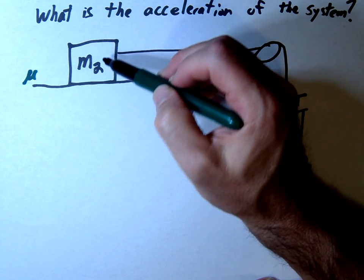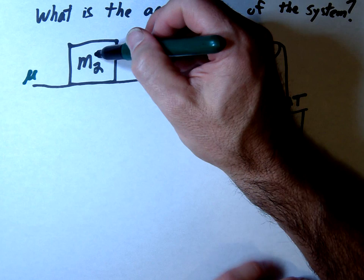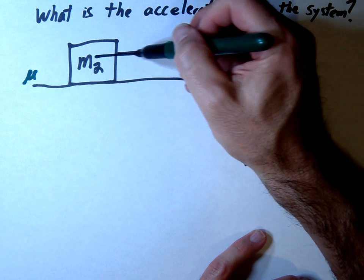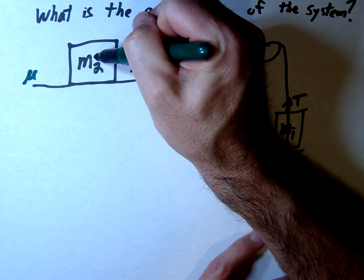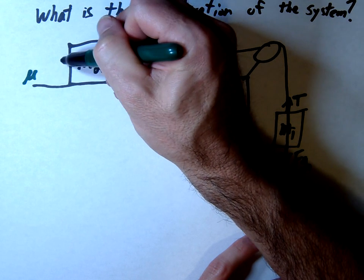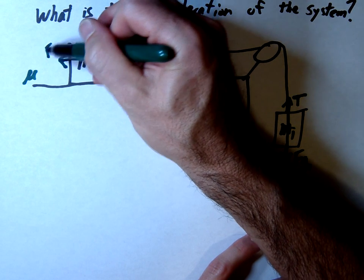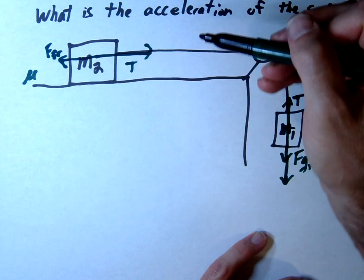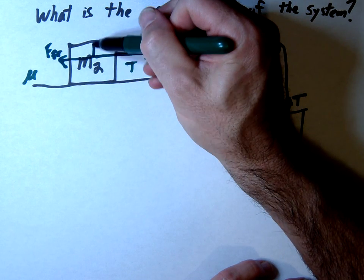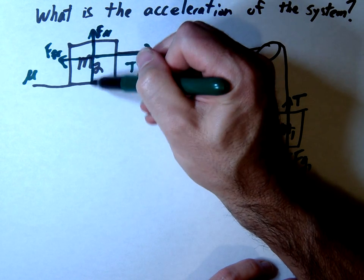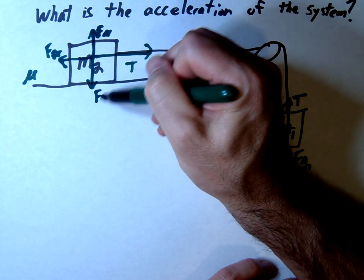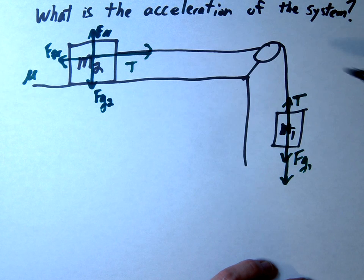Now we'll do the same thing for the mass on the table. There's tension pulling to the right, which we'll call T, and friction opposing that motion. We also have the normal force from the table and gravity FG2. That completes our first step.